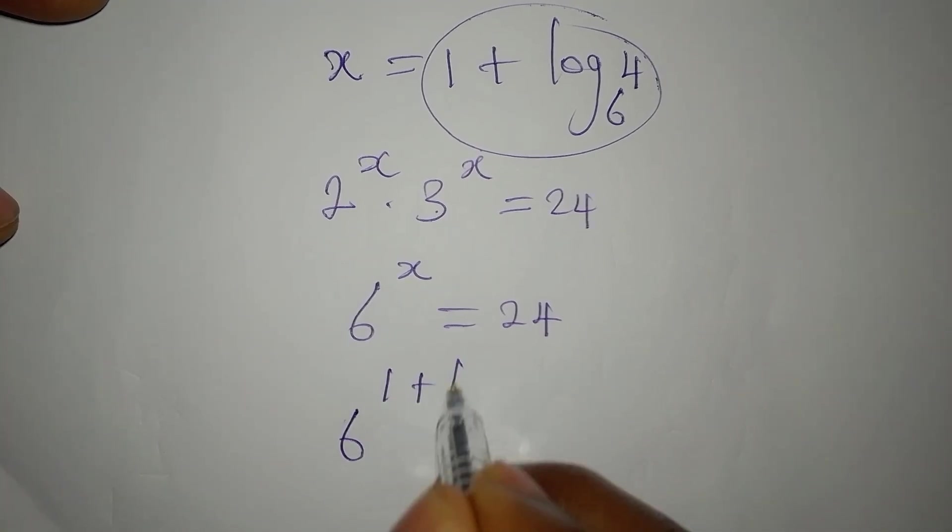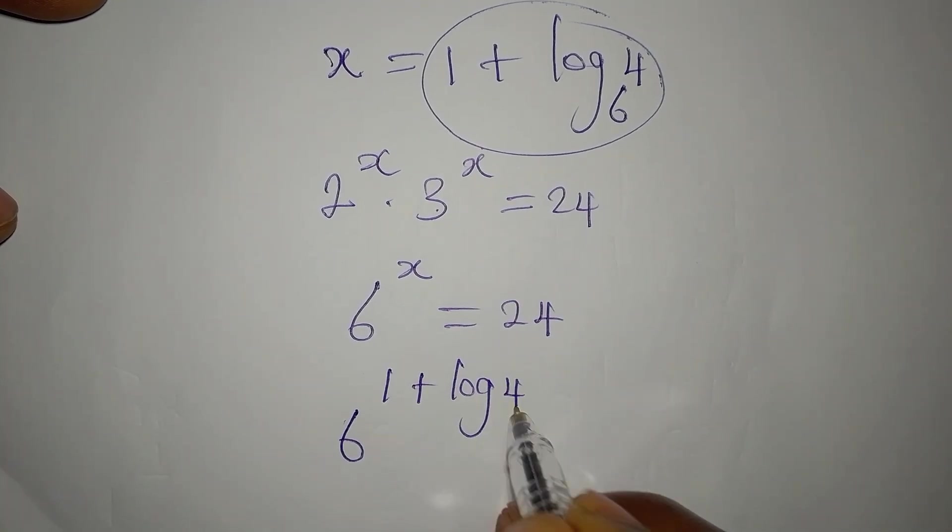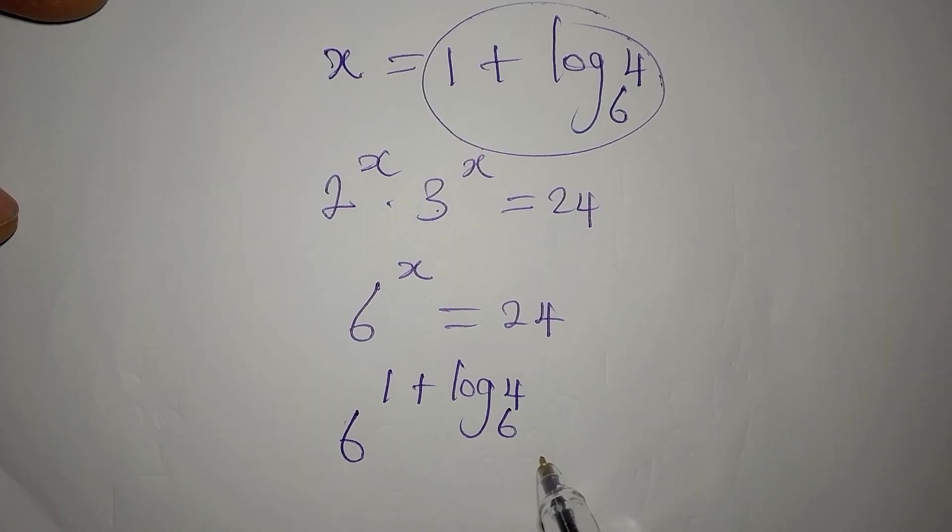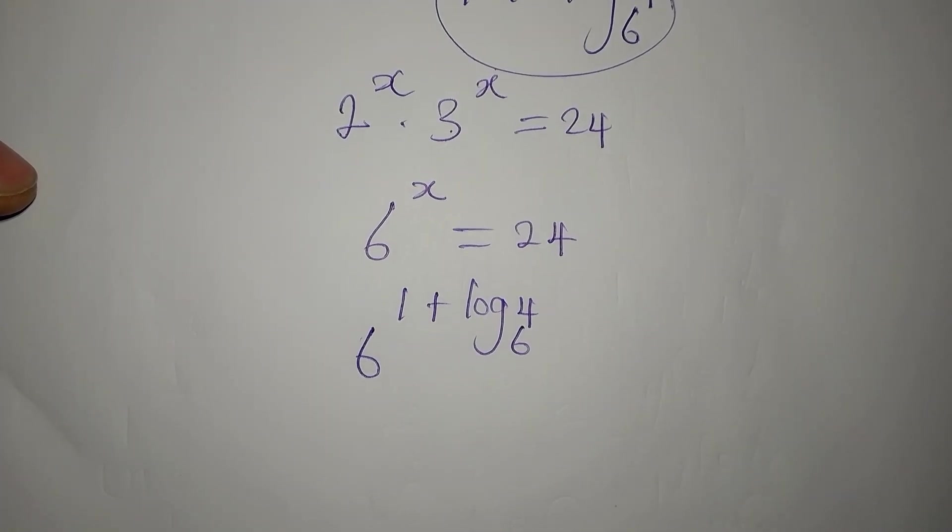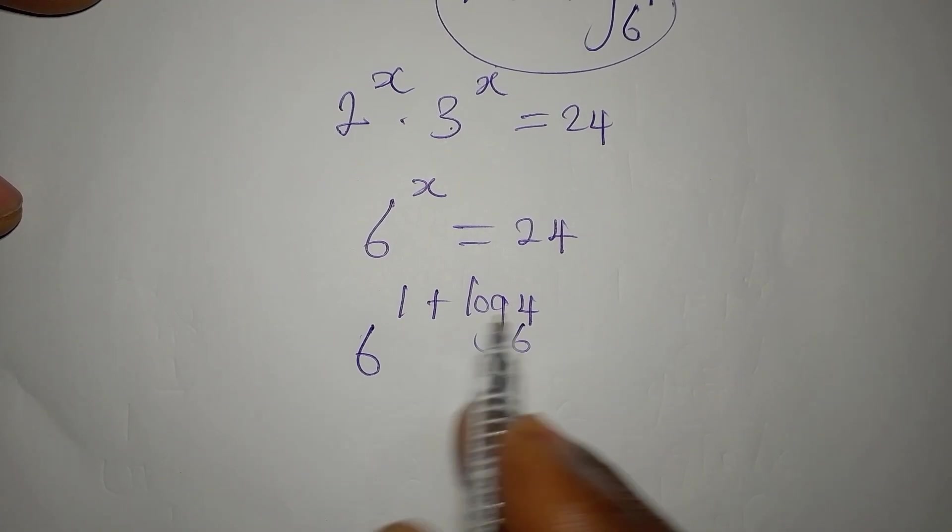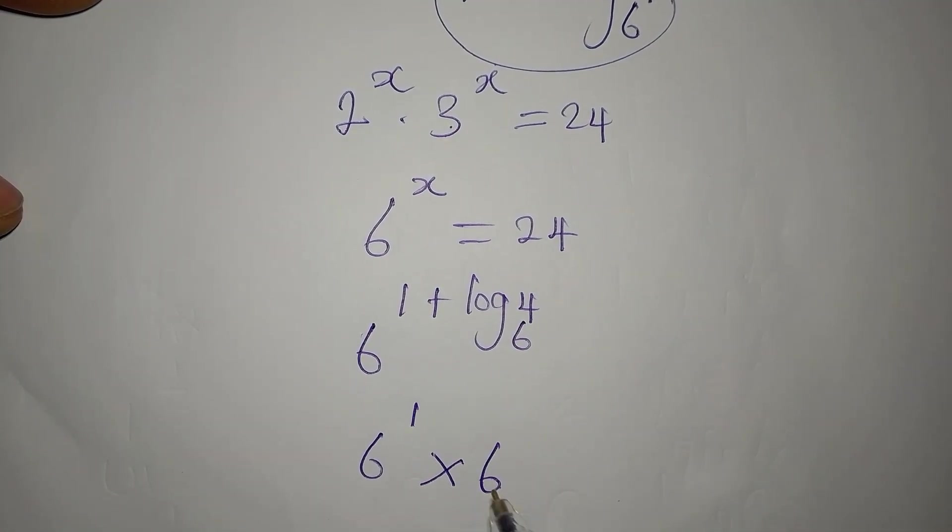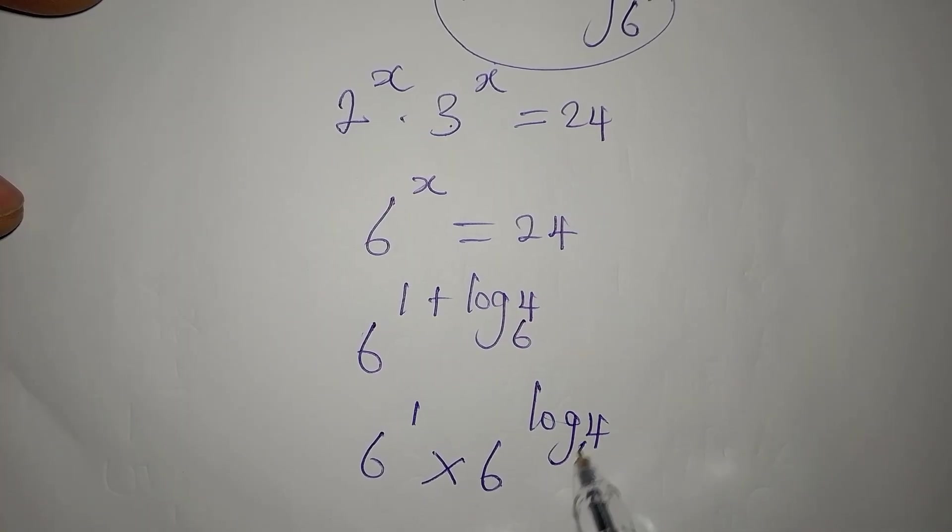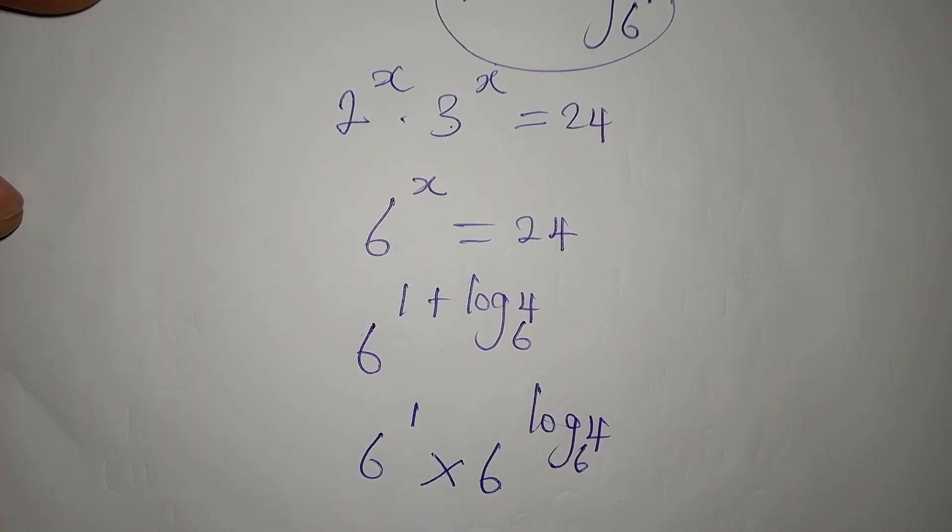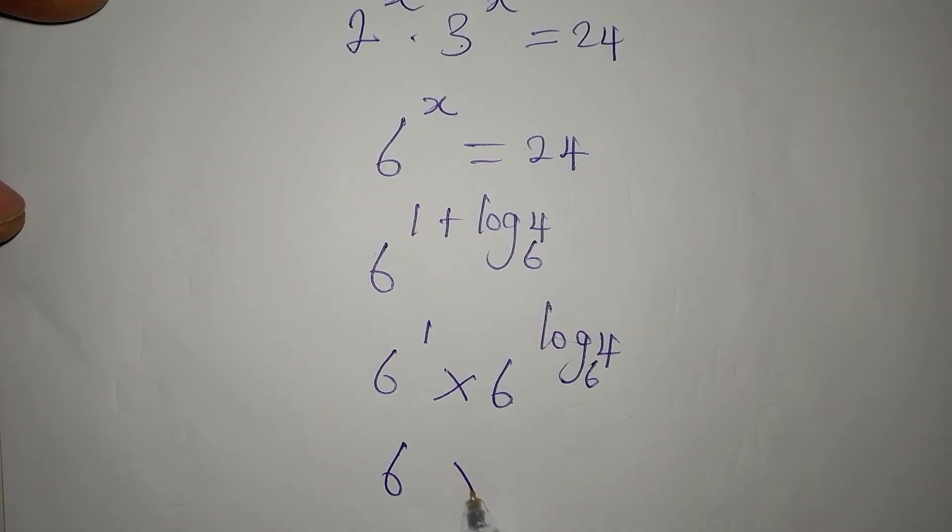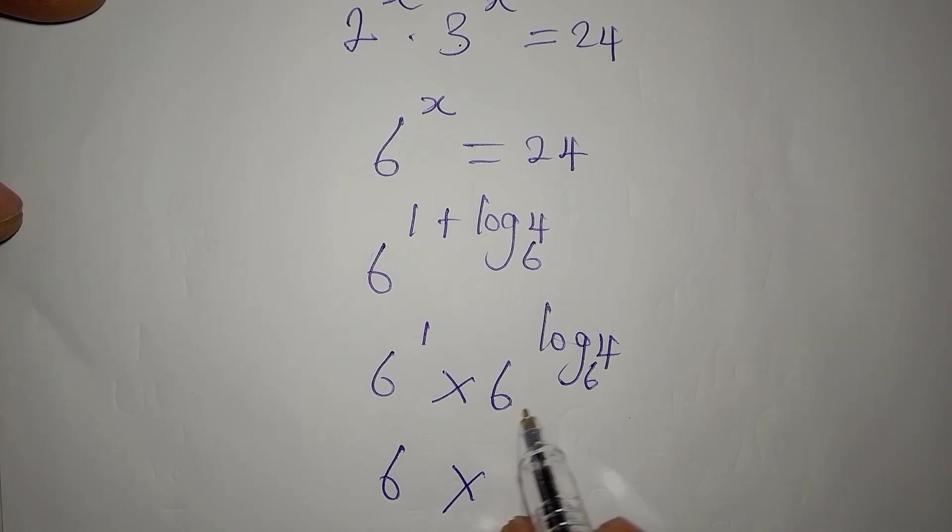We have 6 to the power of 1 plus log 4 to the base 6. Would this give 24? Let's work it from here. This is 6 to the power of 1 multiplied by 6 to the power of log 4 to base 6.